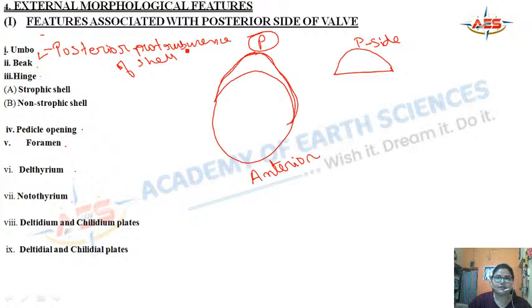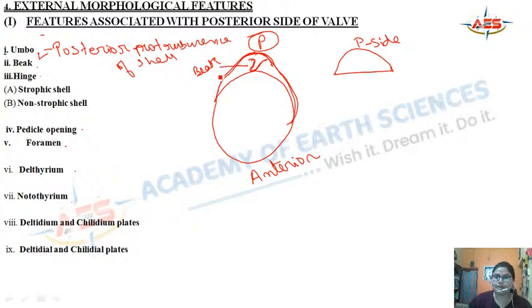The beak is the pointed extremity of the umbo. The beak marks the initial point from which shell growth begins.